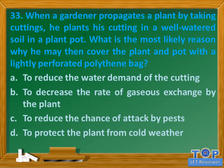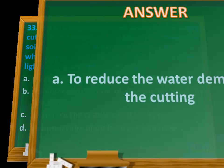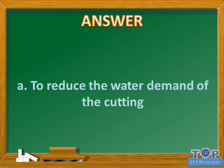Question number 33. When a gardener propagates a plant by taking cuttings, he plants his cutting in a well-watered soil in a plant pot. What is the most likely reason why he may then cover the plant and pot with a lightly perforated polythene bag? A. To reduce the water demand of the cutting. B. To decrease the rate of gaseous exchange by the plant. C. To reduce the chance of attack by pests. D. To protect the plant from cold weather. Answer: A. To reduce the water demand of the cutting.